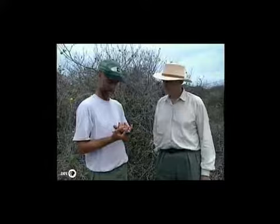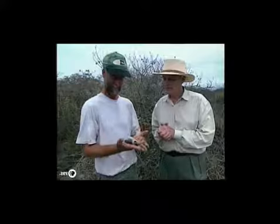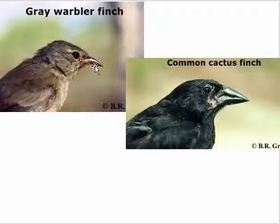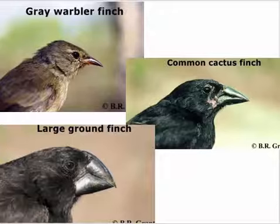Let's compare: here's a gray warbler finch — look at its beak. Here's a cactus finch — look at its beak. And here's a large ground finch. These three beaks are very, very different — all better for different purposes.